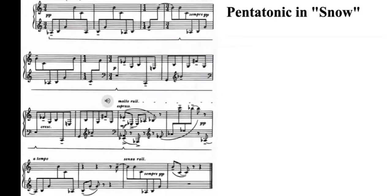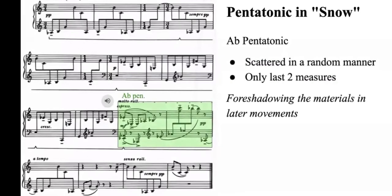In the movement Snow, pentatonic elements appear in the middle section, where pitches of Ab pentatonic scale are scattered in a random manner and only span two measures amid the sea of 0145 repetition. Let's have a listen. In terms of duration, it does not suggest a large proportional importance. However, it does signify the start of pentatonic development in these three movements.